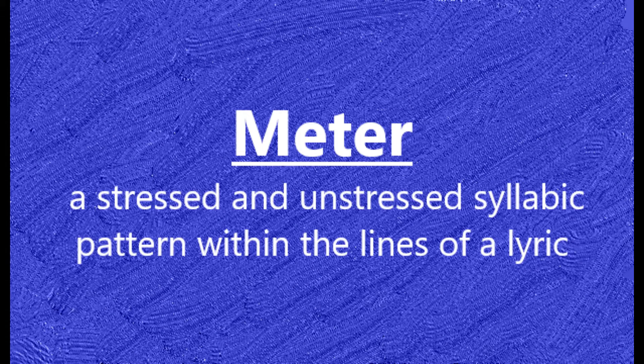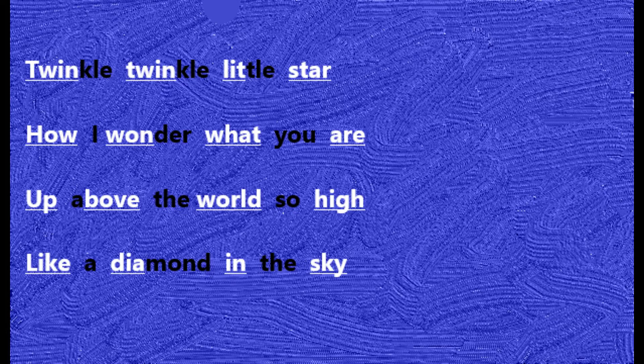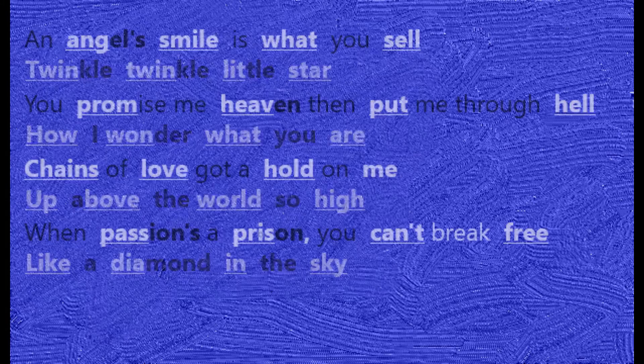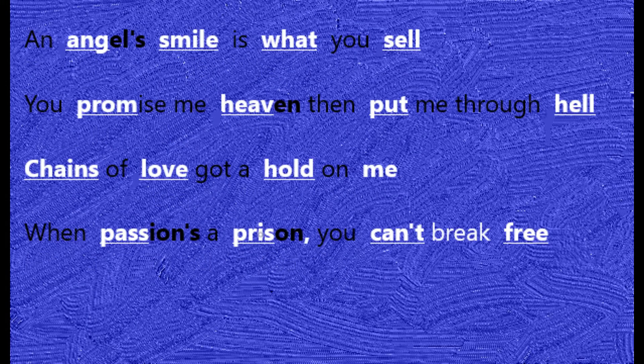Both Twinkle Twinkle Little Star and You Give Love a Bad Name have the same amount of stressed syllables in each line, meaning they have the same meter. So rhythmically, these two melodies are similar, but in all the ways that matter in songwriting, they're identical.